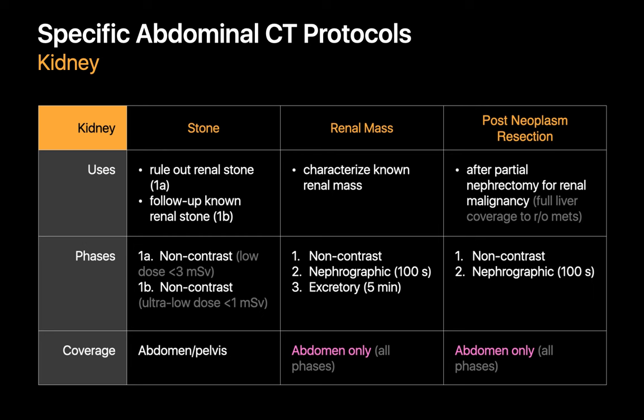The renal mass protocol is used to investigate known renal masses that might have been incidentally discovered, for example during a chest CT or an ultrasound study. Three scans are made through the abdomen: one non-contrast scan and two contrast enhanced scans, one during the nephrographic phase and one during the excretory phase of enhancement. The post-renal neoplasm resection protocol is used in patients who've undergone a partial nephrectomy for renal malignancy and consists of one non-contrast scan and one enhanced scan during the nephrographic phase. Since we want to get a good look at the entire liver to rule out liver metastases, it's particularly important that these scans completely cover the liver.